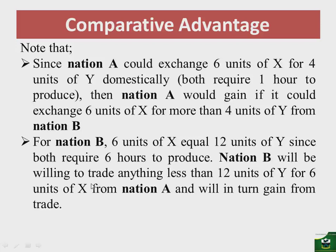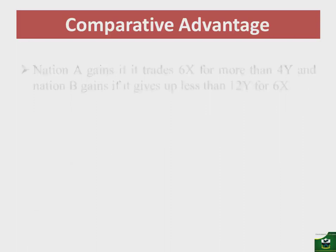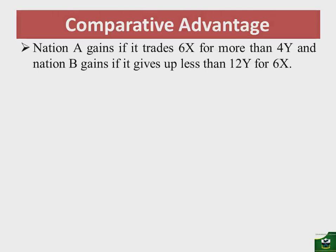Nation B is willing to give up less than 12Y for 6X from nation A, and in doing so it will gain. So nation A gains if it trades 6X for more than 4Y, and nation B gains if it gives up less than 12Y for 6X. Given this analysis, we now have our mutually advantageous range for trade.